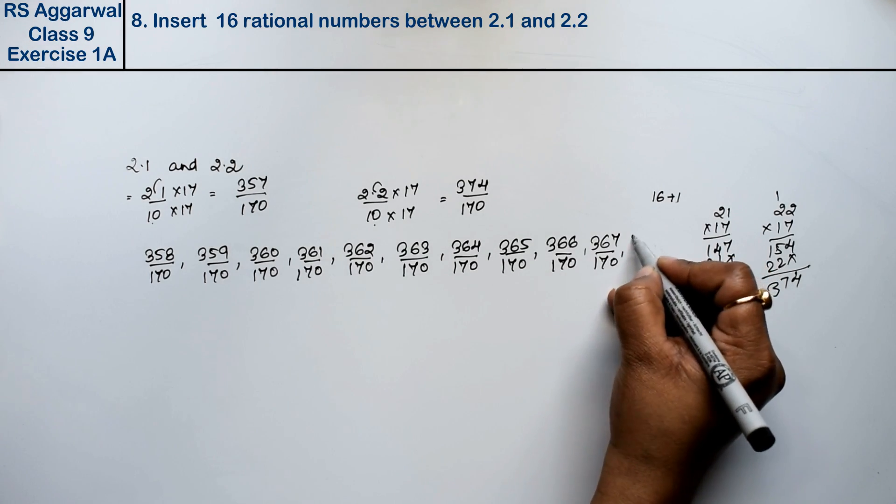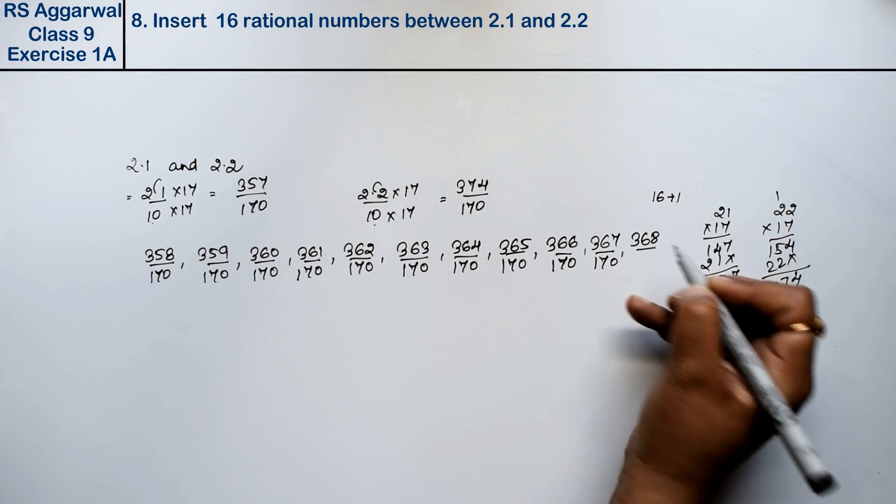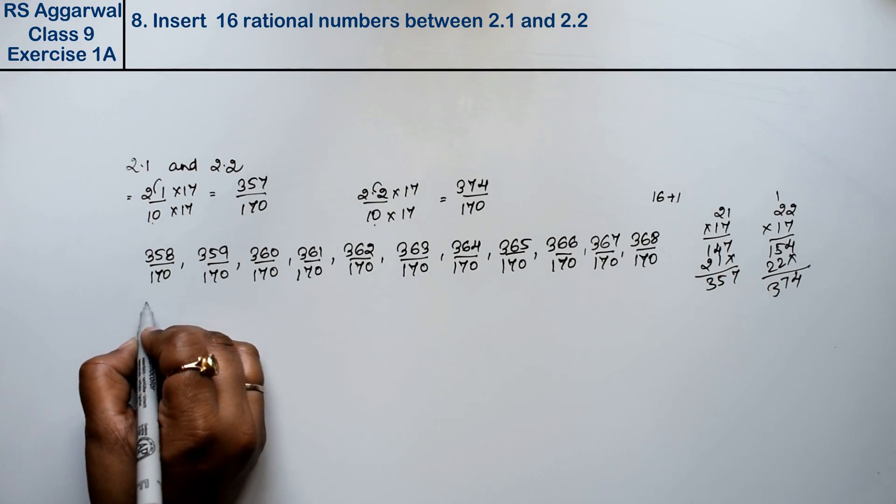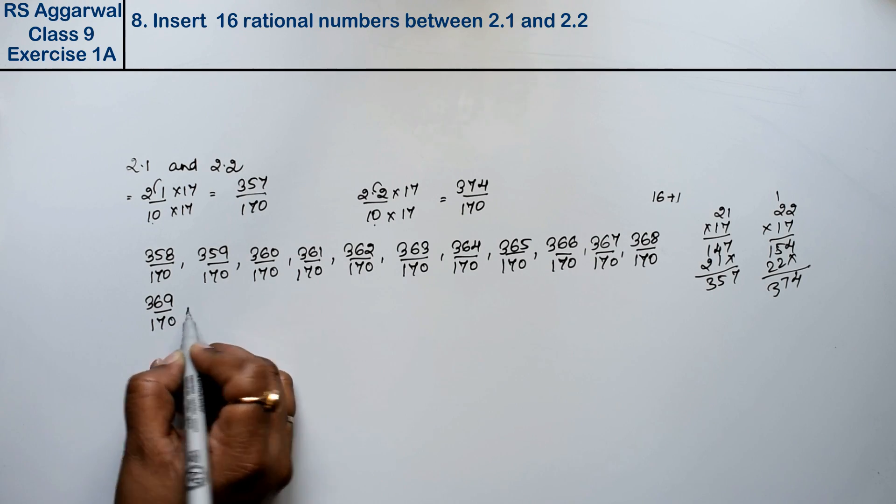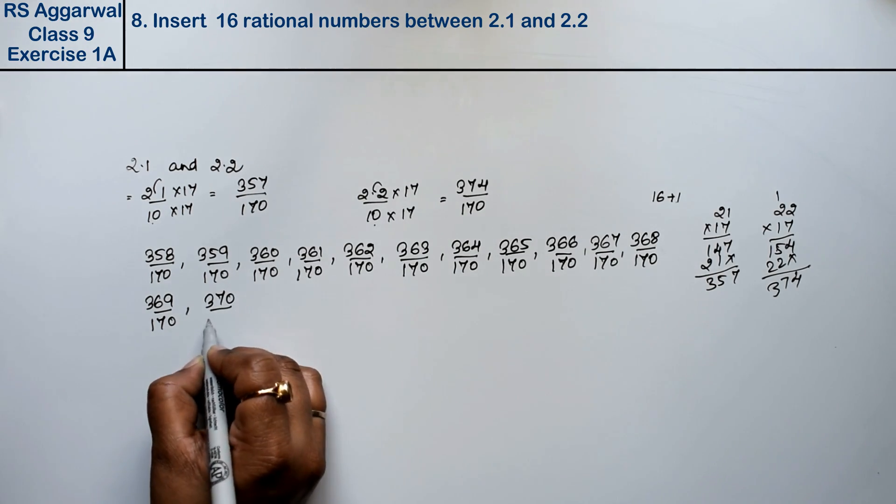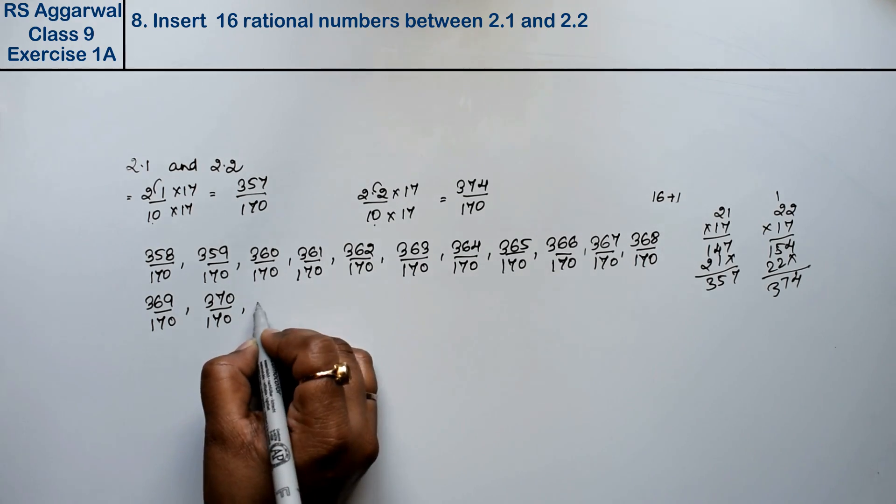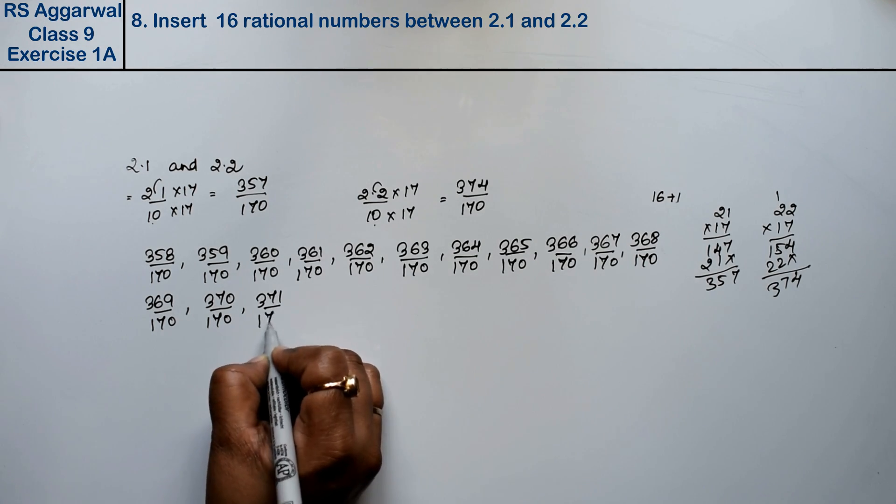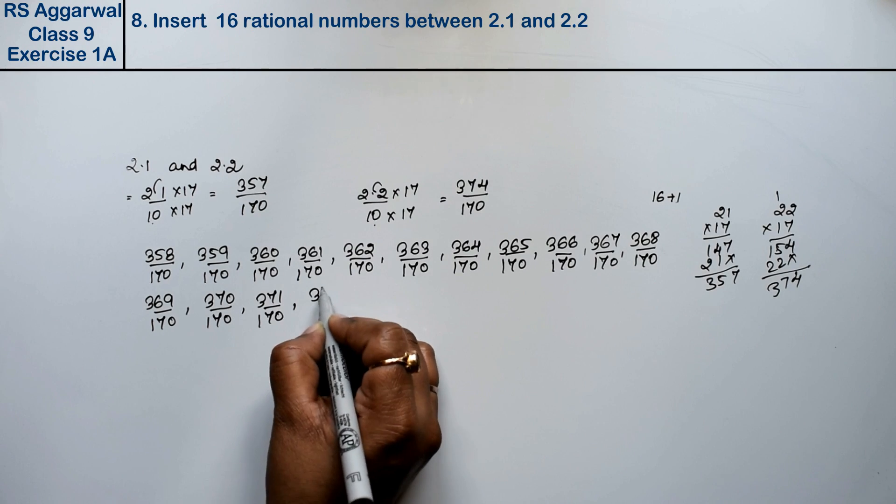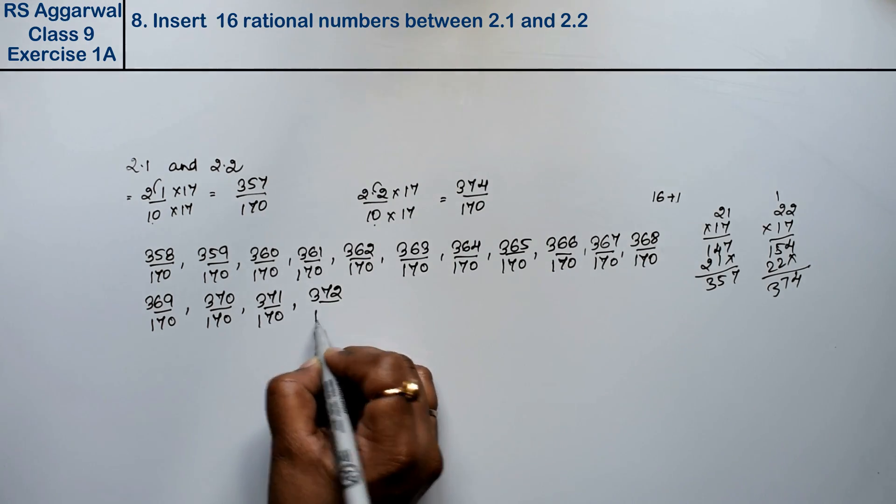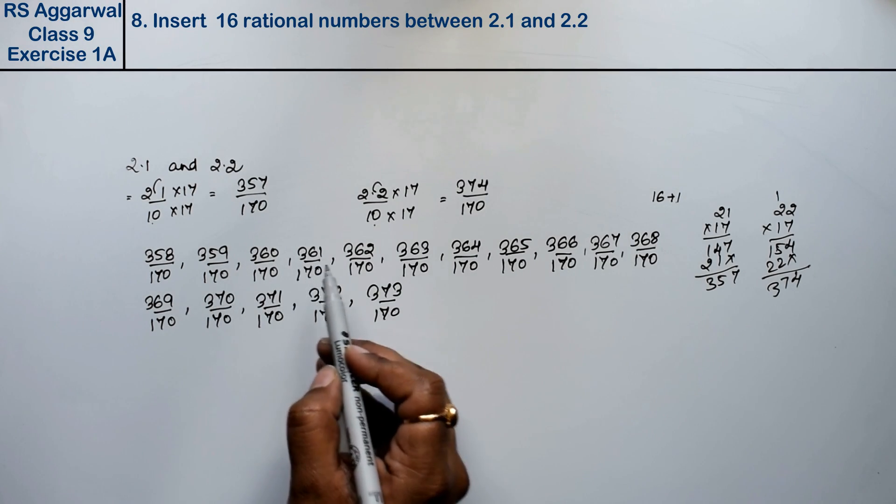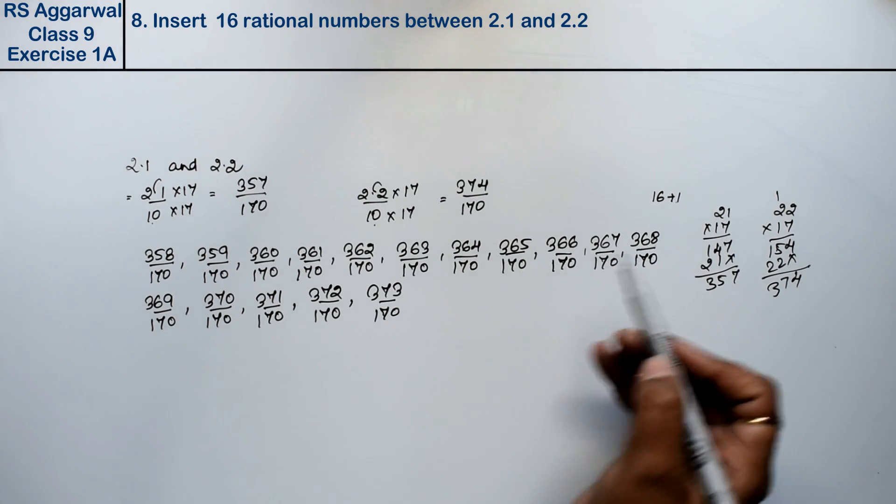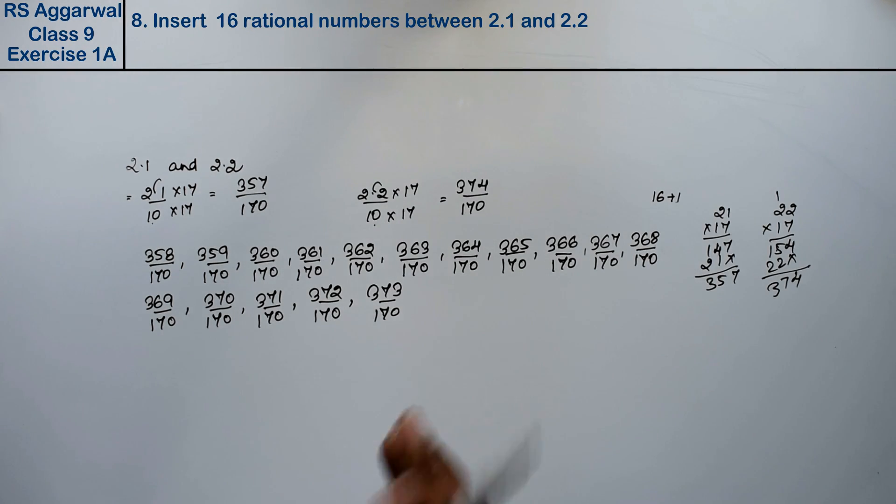We will continue: 368 divided by 170, 369 divided by 170, 370 divided by 170, 371 divided by 170, 372 divided by 170, 373 divided by 170. Counting 1 through 16. These are our 16 rational numbers.